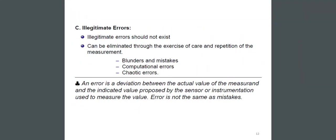Illegitimate errors. Illegitimate errors should not exist; they can be eliminated through the exercise of care and repetition of the measurement. Examples include blunders and mistakes, computational errors, and chaotic errors.